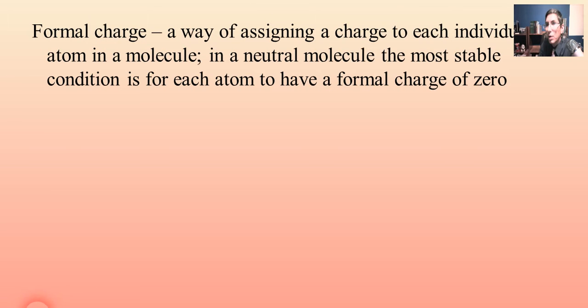A formal charge is something that you want to be able to calculate whenever you're drawing a Lewis electron dot diagram. Formal charge is basically a way that we assign a charge to each individual atom in a molecule. In the best case scenario in a neutral molecule, something that's not an ion, the most stable condition is for every atom in that molecule to have a formal charge of zero.